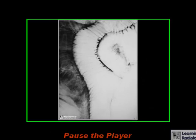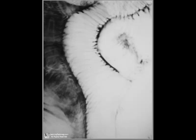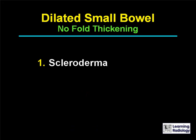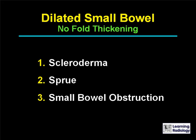The differential is for dilated small bowel with no fold thickening. There are three causes: scleroderma, sprue, and a mechanical small bowel obstruction.